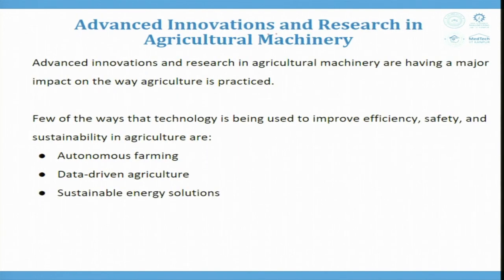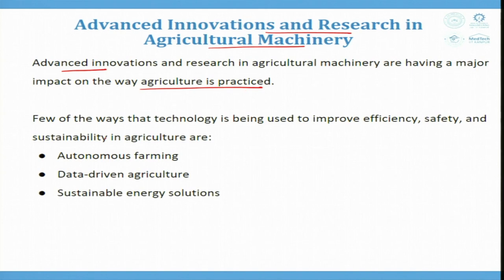Advanced innovation and research in agriculture machinery is having a major impact on how agriculture is practiced. Some advanced machines use artificial intelligence and autonomous systems. Key areas of technology improving efficiency, safety, and sustainability are: autonomous farming, data-driven agriculture, and sustainable energy solutions.